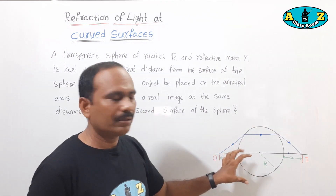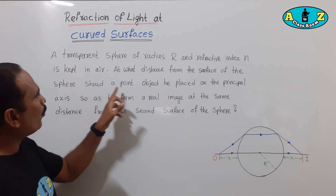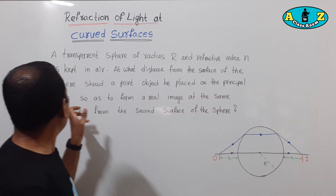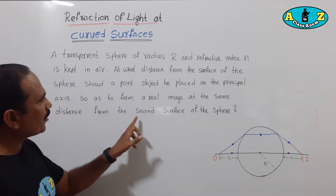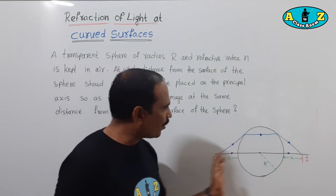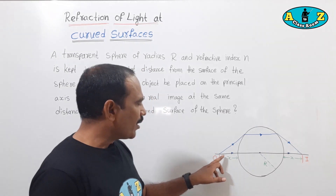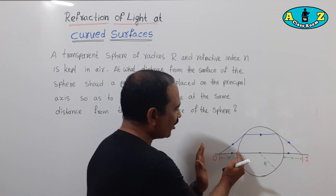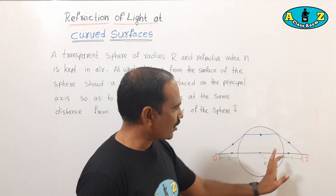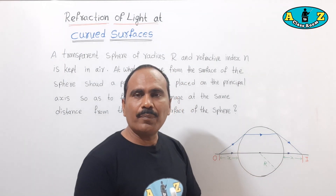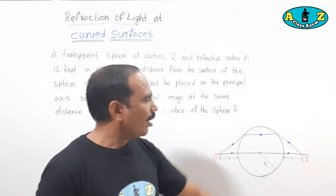This sphere is kept in air. At what distance from the surface of the sphere should a point object be placed on the principal axis so as to form a real image at the same distance from the second surface of the sphere? On the principal axis, a pointed object is placed — from what distance from the surface of the sphere must it form an image at equal distance from the second surface on the principal axis?